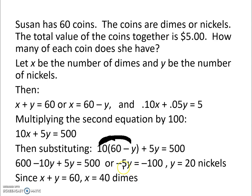How we got to there is, combining like terms, negative 10y plus 5y leaves us negative 5y. Subtracting 600 to the other side, we have negative 100. But we don't want negative 5y, so we divide both sides by negative 5, and we find that y equals 20, and in this case, it is 20 nickels.